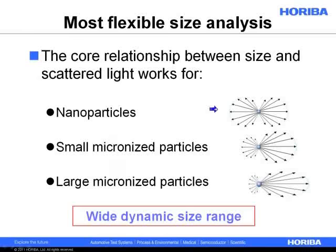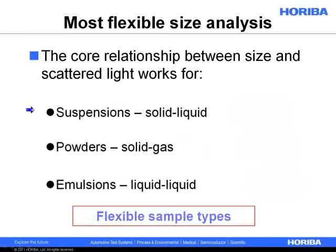It works for nanoparticles, small micronized particles, and large micronized particles. If a particle is small enough, the light will scatter essentially isotropically — this is also known as Rayleigh scattering. For a small micronized particle, most scattering will be in the forward low-angle regime. As the particle gets larger and larger, more and more of its light gets scattered in the forward low-angle direction. Diffraction is also flexible in the sense that it can measure many different types of materials — suspensions, powders, emulsions, and even creams and pastes using the right accessories.